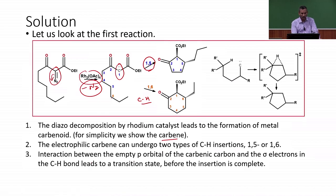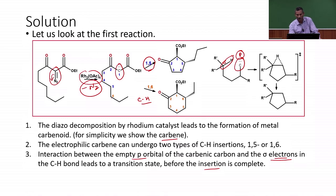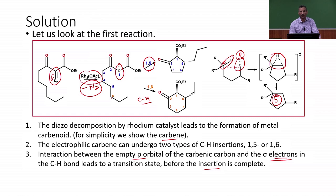The carbene carbon has an empty p orbital, and the sigma electrons of the C–H bond must overlap with it in the transition state before insertion is complete. This involves a 3-membered ring-like transition state that leads to hydrogen transfer. This overlap is more feasible for a 5-membered ring transition state than for a 6-membered one. Therefore, 1,5 C–H insertion is the most preferred, giving a 5-membered ring product.